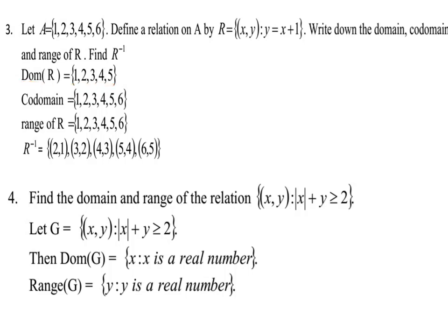The codomain of R is the full set A, which is {1, 2, 3, 4, 5, 6}, since the relation is from A to A. The range of R is {2, 3, 4, 5, 6}. For R inverse, by definition R inverse contains ordered pairs (b, a) where (a, b) is an element of R, so R inverse is {(2,1), (3,2), (4,3), (5,4), (6,5)}.